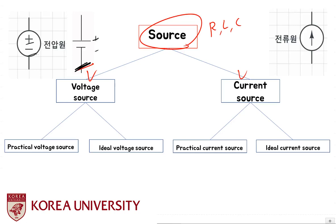A current source in an electric circuit is an element that provides a predetermined constant current through a terminal. The symbol for a current source has an arrow in it, which goes in the direction of the constant current.